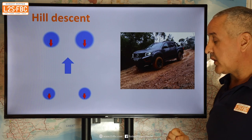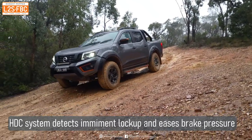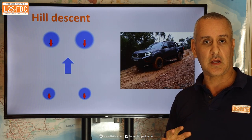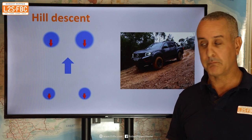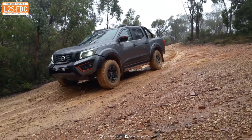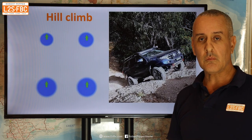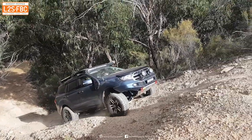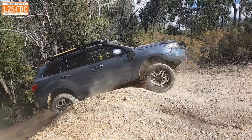Coming down a hill in a Navara, the front left wheel locks up and then unlocks — that's the electronic hill descent system detecting that the wheel is rotating slower than the others and momentarily releasing brake pressure. You don't want those wheels to lock up and skid, as that could end badly. Coming downhill, the weight shift to the front means the front traction circles are drawn larger; the left circle is slightly bigger than the right due to slightly more weight on that side.